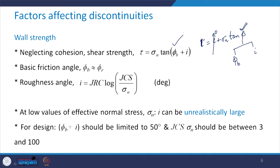The basic friction angle can be approximately taken as equal to the residual friction angle. The roughness angle can be defined in degrees using an expression involving JRC and JCS, which represent characteristics of the rock. At low values of effective normal stress sigma_n, this value of I can be unrealistically very large.